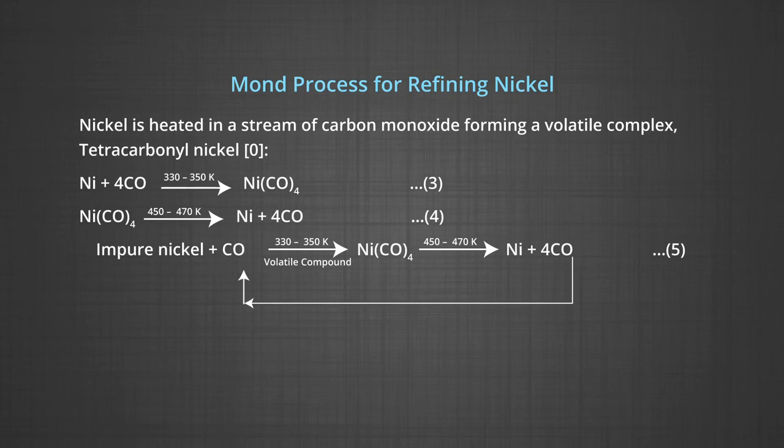The reactions of Mond's process, as discussed, can be seen in the flow chart. The impure nickel reacts with carbon monoxide to form nickel tetracarbonyl, which is further decomposed to form nickel and carbon monoxide. Thus, you may see that the carbon monoxide is recycled in the process as shown.